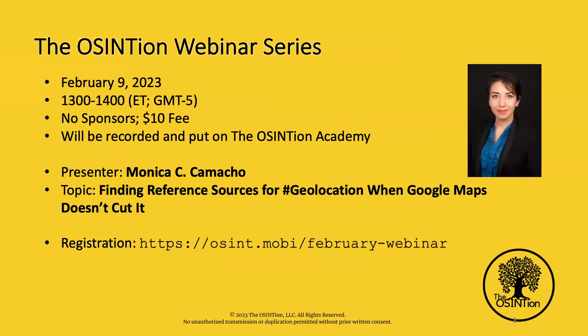With the Ascension webinar series, the next day on February 9th at 1 p.m. Eastern time, we are running a webinar featuring Monica Camacho talking about finding reference sources for geolocation when Google Maps doesn't cut it. The registration link is at the bottom. Because there are no sponsors involved, it will cost $10 to offset infrastructure costs, with anything beyond that primarily going to the presenter.